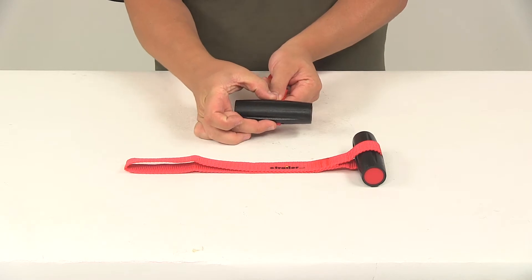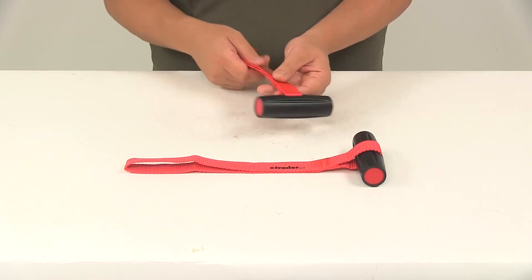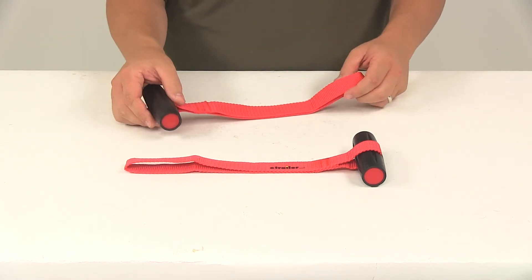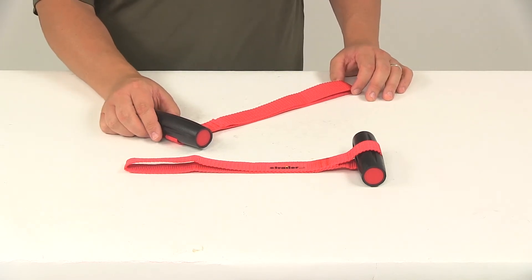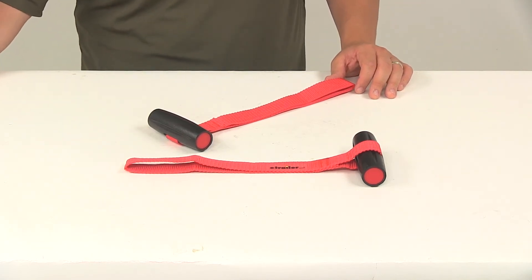And then the diameter at the thickest point is one and three eighths of an inch. With this part number, you're going to get two hood loops. That's going to do it for today's look at the Malone Quicklash T-Style Hood Loops.